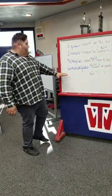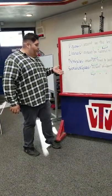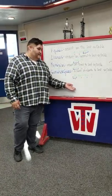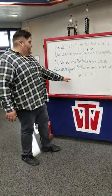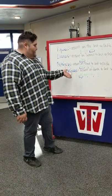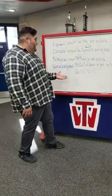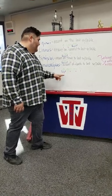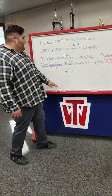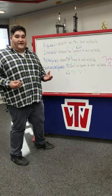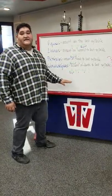We also have the sobreesdrújulas, which places the accent on the fourth to last syllable from right to left. The example word is díganmelo. If you look at the syllables labeled one to four from right to left, when you say díganmelo, you can hear that the accent and emphasis is on the fourth syllable.